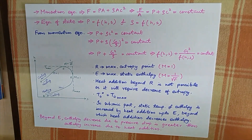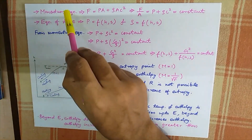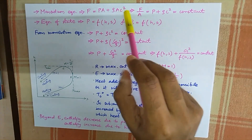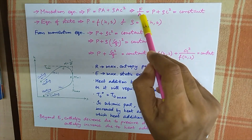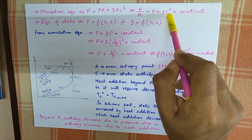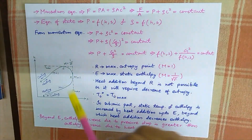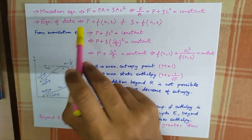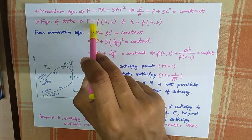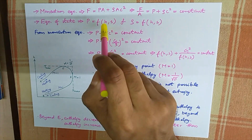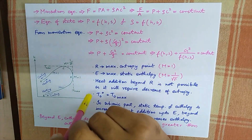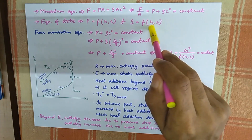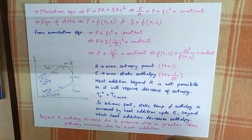The next governing equation is the momentum equation: F equals P times A plus rho times A times C squared, or F divided by A equals P plus rho C squared, which equals a constant. From the equation of state, pressure P is a function of enthalpy H and entropy S, and density rho is also a function of H and S.